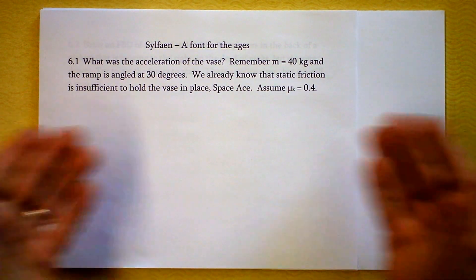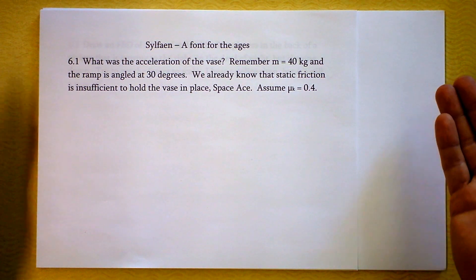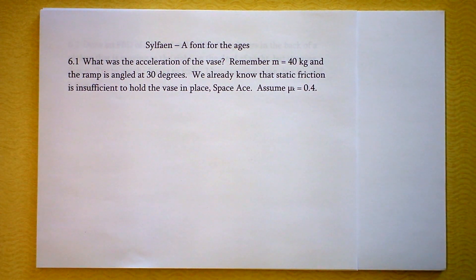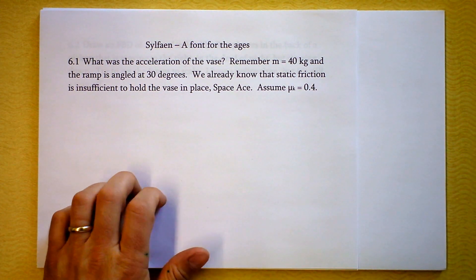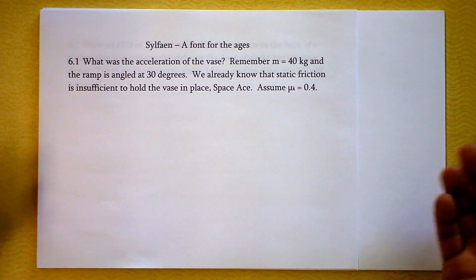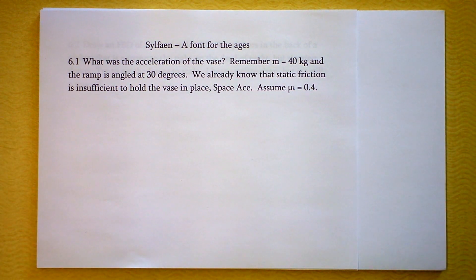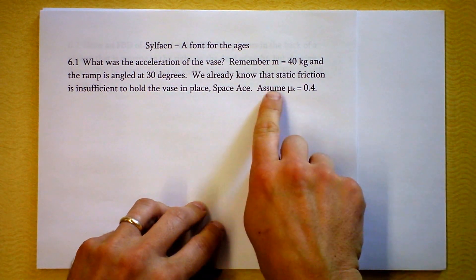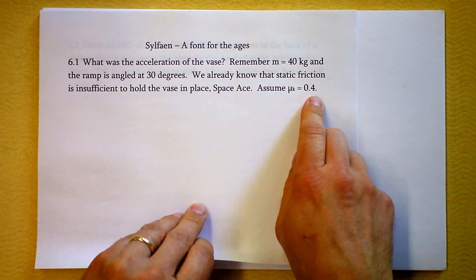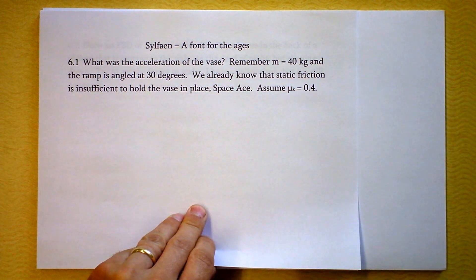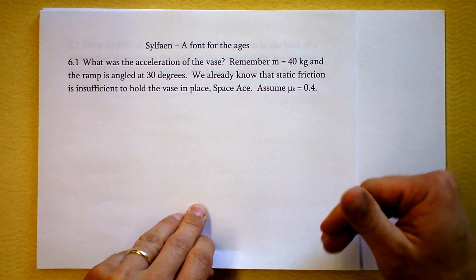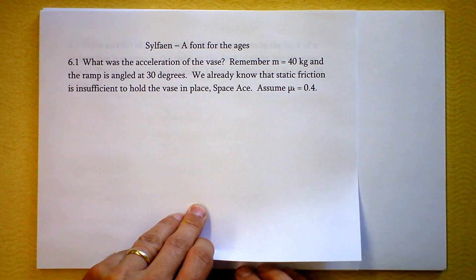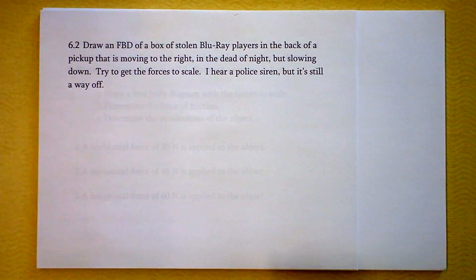The first thing I want you to note is this wonderful font, though I don't know how to say it. In this problem we address that Shinny has wonderfully convinced us that the vase will accelerate, but she left us totally hanging. What is the acceleration of the vase? Well, let's find it. I had to assume one more thing: that mu sub k was 0.4. That's a little less than mu sub s, because the static coefficient of friction is greater than the kinetic coefficient of friction.